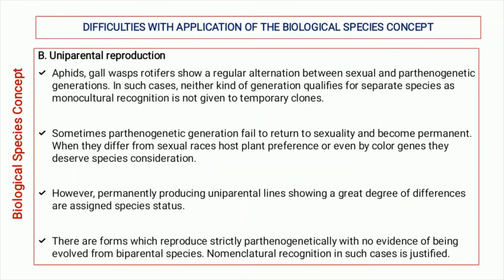In the case of aphids, gall wasps, and rotifers, there is an alternation of generations — an alternation of sexually breeding generations with parthenogenetic generations. Neither of these generations alone can be used to apply the biological species concept. In some cases, parthenogenetic generations fail to return to sexuality, so some individuals carry on parthenogenetic reproduction while others continue sexual reproduction.